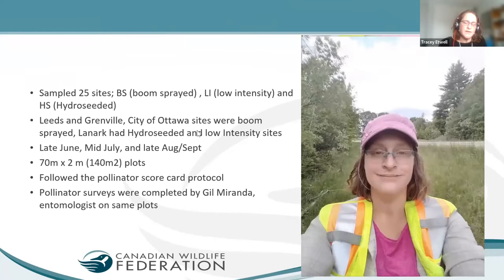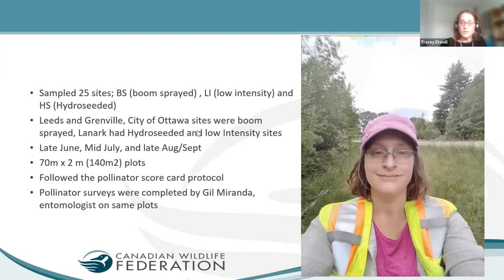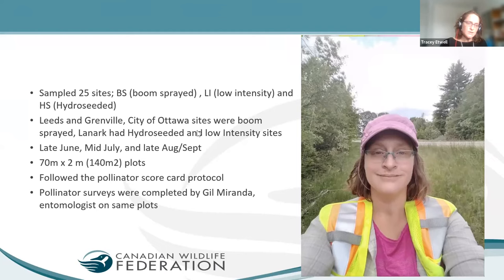We sampled 25 sites — some boom-sprayed, some low-intensity, some hydro-seeded — across the three areas. Sampling was done in late June, mid-July, and late August/September to capture the three parts of the season, since different flowers appear at different times and pollinators vary accordingly. Plots were 70 meters by 2 meters, based on the pollinator scorecard protocol. We also had our entomologist sample the same sites to identify actual pollinator species found in each location.